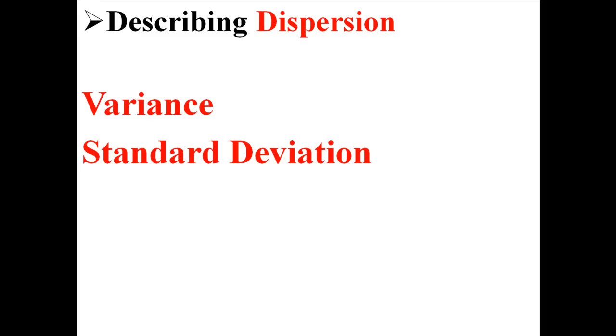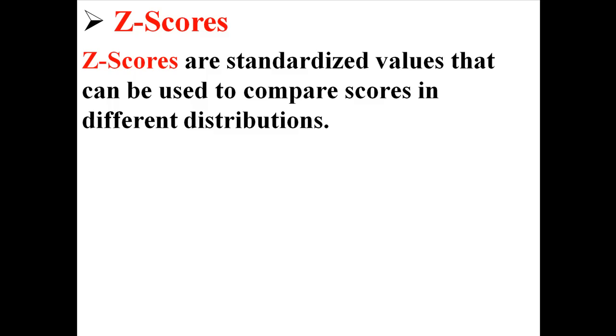This is the first lecture in a two-part series on z-scores. So far I've talked about ways of describing central tendency, like the mean, median, and mode. I've also talked about describing how data is dispersed about the mean, with things like variance and standard deviation. So now I'm going to talk about z-scores. Z-scores are standardized values that can be used to compare scores in different distributions.